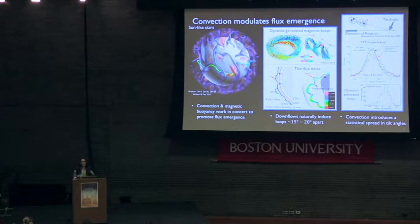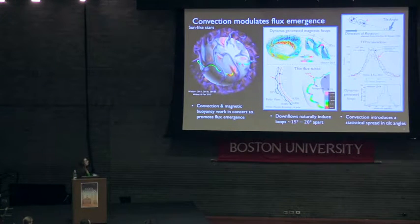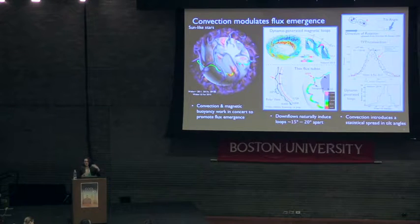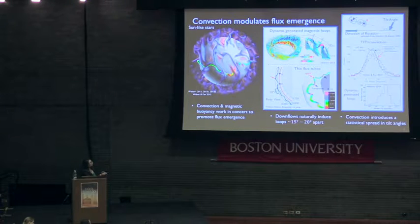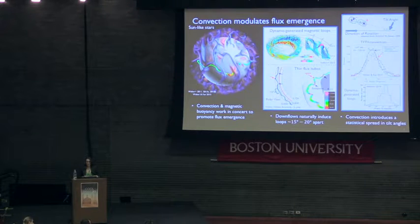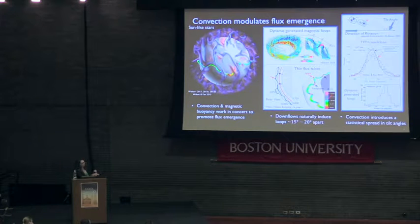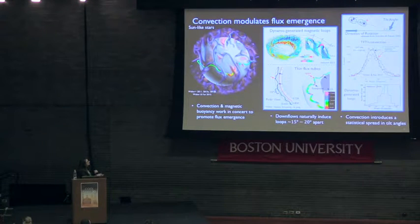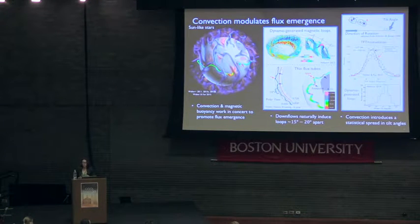We can extract properties of the loop when they reach the near surface and compare those to sunspot observations. One example is the tilting action of the flux tube's legs toward the equator, similar to the observed tilt of magnetically bipolar solar active regions. In our simulations, convection alone results in a statistically Gaussian distribution of tilt angles, shown here through this histogram. A similar tilt angle distribution is also found from the dynamo-generated loops, and in both cases these agree quite well with what is actually observed for the tilt angle distribution on the sun.